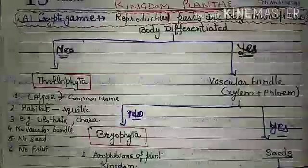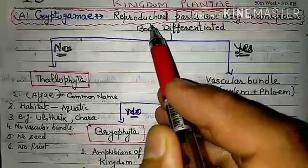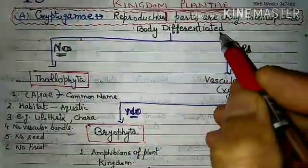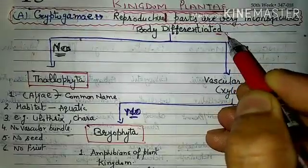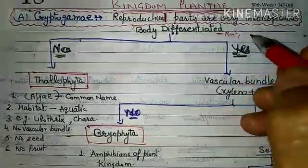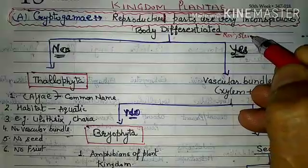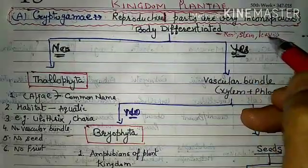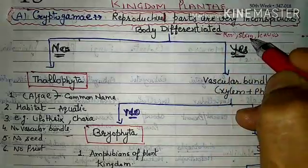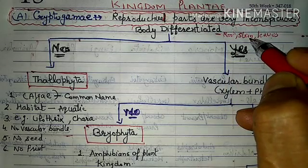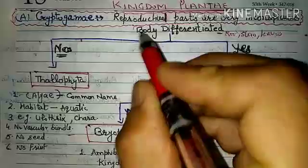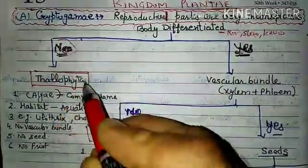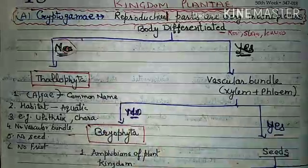The first criterion is body differentiation. We check whether the plant body has roots, stems, and leaves. If the body is differentiated into roots, stems, and leaves, we proceed further. If the body is not differentiated, then we place those plants in Thallophyta.